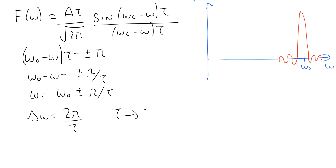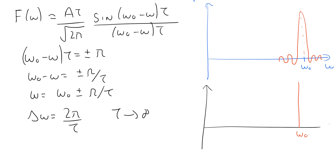If tau tends to infinity — an infinitely long pulse — the width of the Fourier transform gets smaller and smaller, eventually leaving just a spike at omega-0. So an infinitely long pulse contains only a single frequency, omega-0. Conversely, as the pulse gets shorter and shorter, the width of the Fourier transform gets larger and larger, meaning more and more frequency components are present.